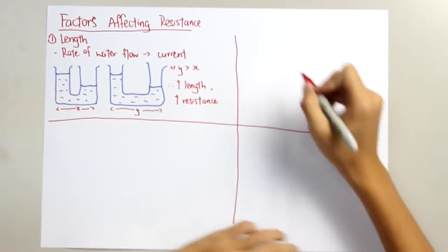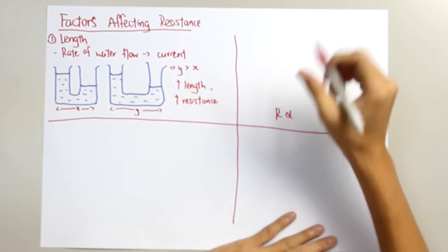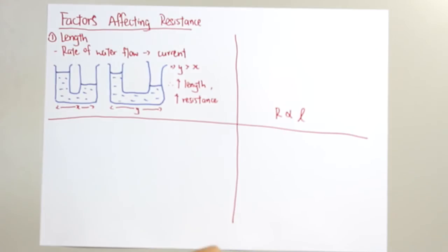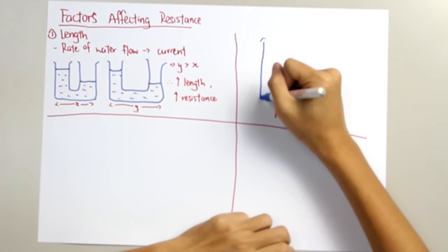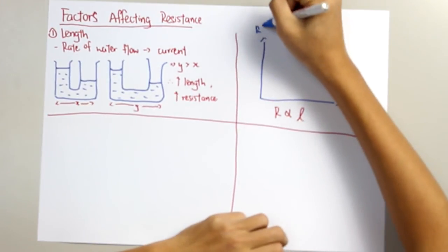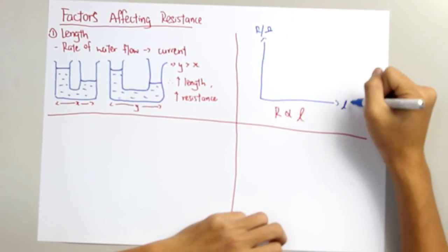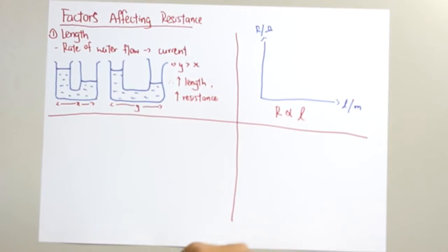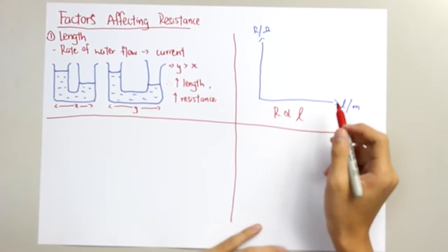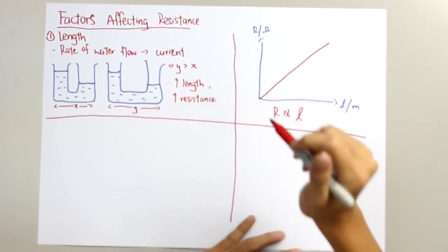And so, for the graph, R is directly proportional to L. We label the y-axis as R, which is Ohm, and then the x-axis as L, the meter. And for the directly proportional graph, we plot a straight line which cuts through the origin.